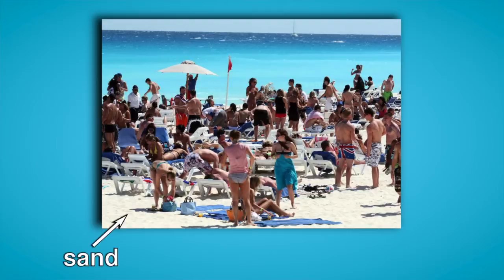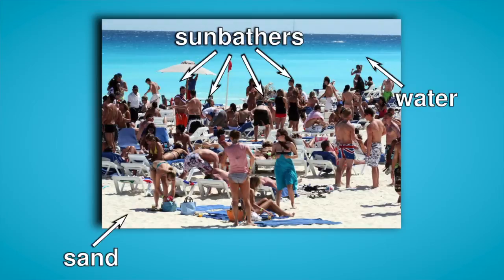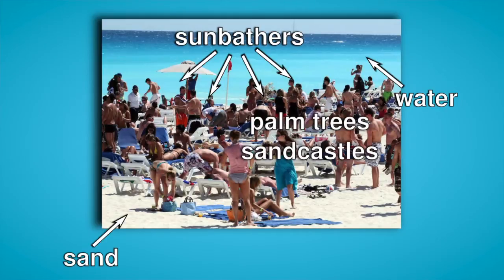For example, if you see sand, water, and sunbathers, you'll probably categorize the scene as a beach. And if I say the word beach, you'll likely recall these objects plus many other related objects like palm trees, sand castles, volleyballs, and so on.